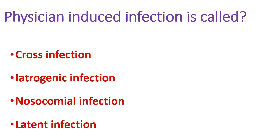Next question: physician-induced infection is called — options are cross infection, iatrogenic infection, nosocomial infection, and latent infection. When a physician or a procedure causes an individual to develop an infection, it is called iatrogenic infection. A previously healthy individual who develops an infection after 48 hours of exposure to a hospital environment is said to have a nosocomial infection.